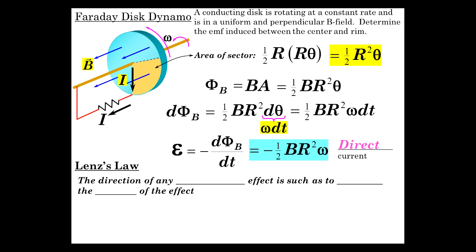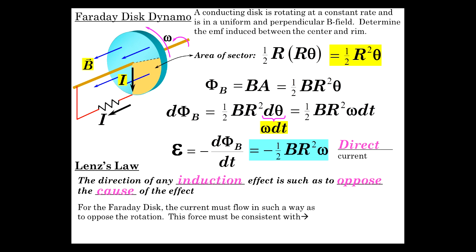A little more can be said about that. Lenz's Law - a good time to formalize it. The direction of any induction effect is such as to oppose the cause of that effect. For the Faraday disk dynamo, the current must flow so that the rotation itself is opposed. This current should not cause the disk to speed up - that would be perpetual motion. It will cause it to slow down, consistent with conservation of energy.